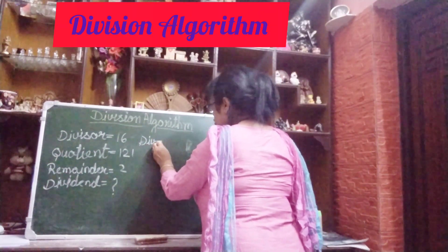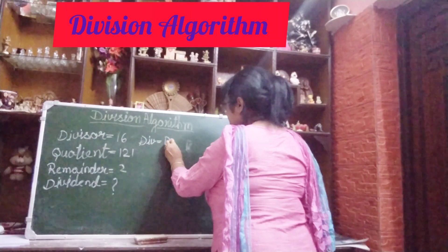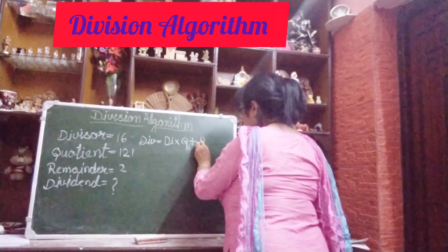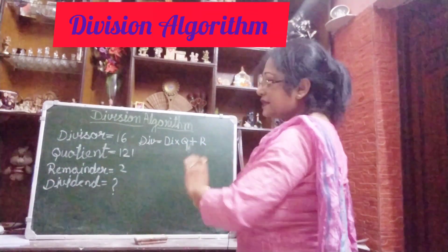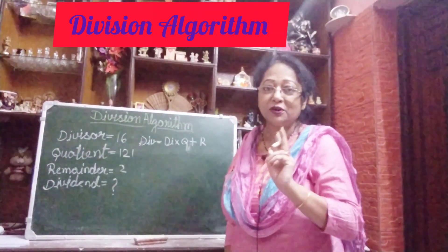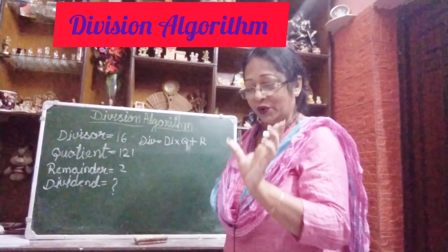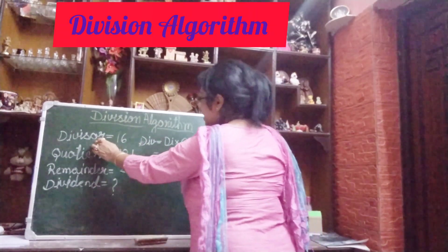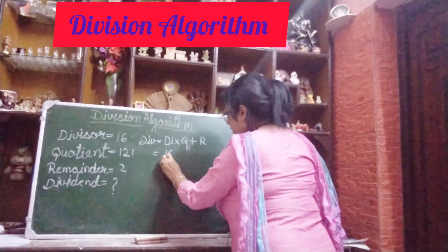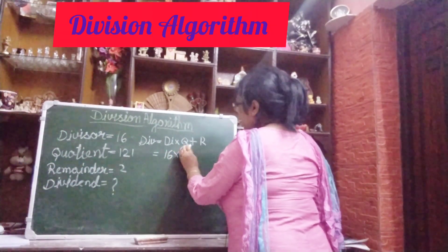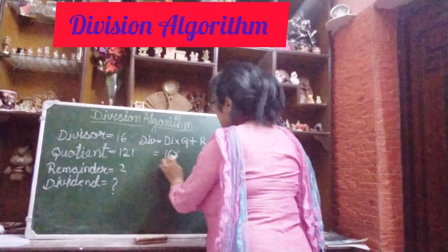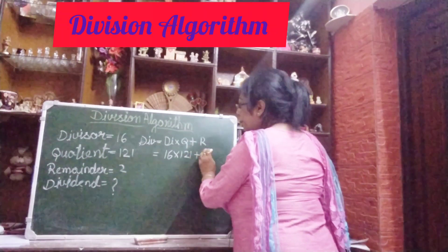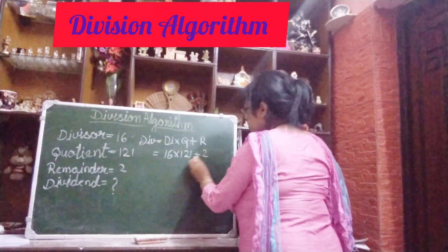Dividend equals divisor multiplied by quotient plus remainder — we know this. Note: I am writing in short form due to space, but you should write the full words. So what is the dividend? We know divisor is 16, so write 16, multiply by quotient which is 121, so write 121, plus remainder which is 2, so write 2.